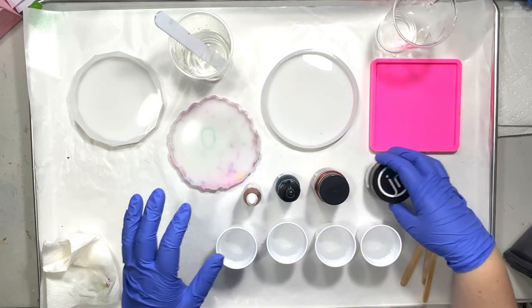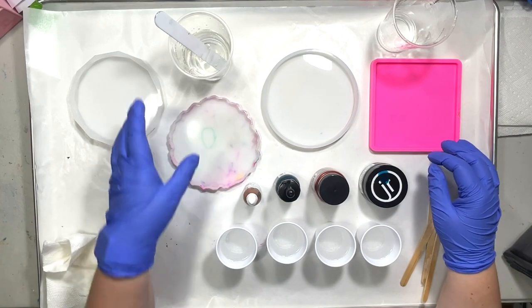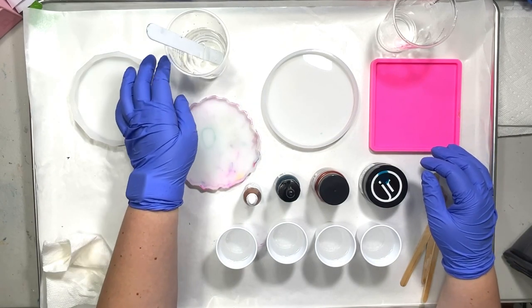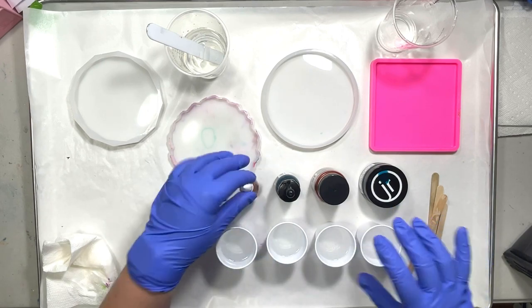Those are the colors I've mixed up. Twelve ounces. I have four ounces of clear set aside, and then I've got two ounces in each of these little cups.